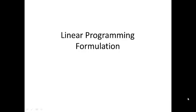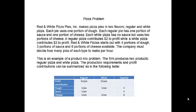Here's an example. Red and White Pizza Pies makes pizza pies in two flavors: regular and white pizza. Each pie uses one portion of dough. Each regular pie has one portion of sauce and one portion of cheese. Each white pizza has no sauce but uses two portions of cheese. A regular pizza contributes two dollars to profit while a white pizza contributes three dollars to profit. Red and White Pizza starts out with four portions of dough, three portions of sauce, and six portions of cheese available.